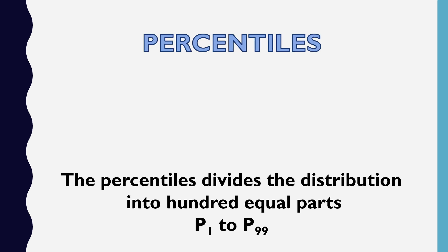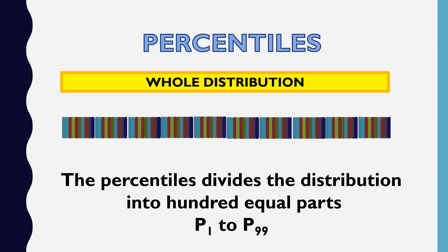Percentiles divide the distribution into hundred equal parts. Kung meron tayong whole distribution, yung distribution na yan, inahati niya sa one hundred equal parts. Kaya lang, sa illustration natin, mas mahirap nang ipakita yung percentile 1 hanggang percentile 99. Kasi sobrang liit. Yung gap between each division is what we call the percentiles.